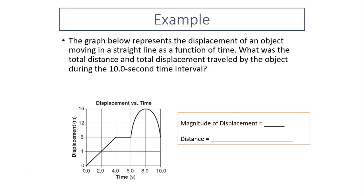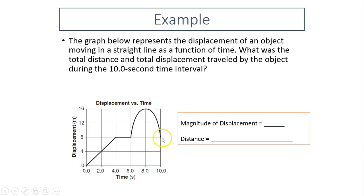The graph below represents the displacement of an object moving in a straight line as a function of time. What was the total distance and total displacement traveled by the object during the 10-second interval? The object started at time 0, traveled 8 meters, stopped, then traveled another 8 meters to 16 meters, and traveled back 8 meters. The magnitude of displacement is 8 meters (started at 0, ended at 8). Total distance is 8 + 8 + 8 = 24 meters.